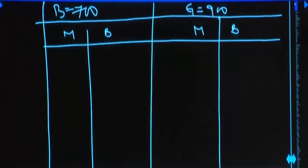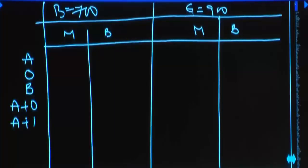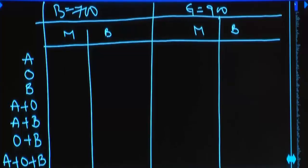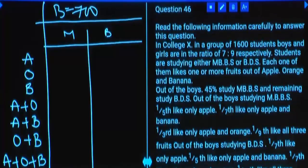Write the combinations: apple only, orange only, banana only, apple and orange, apple and banana, orange and banana, or apple, orange, and banana. So every candidate should be in either of these seven combinations. Fill the data.